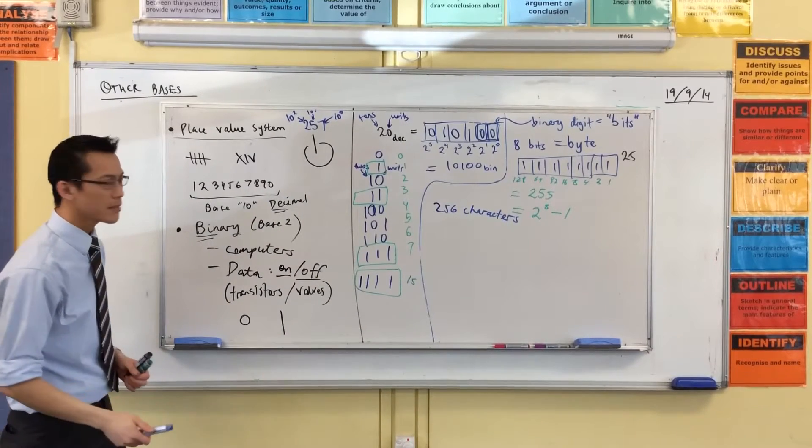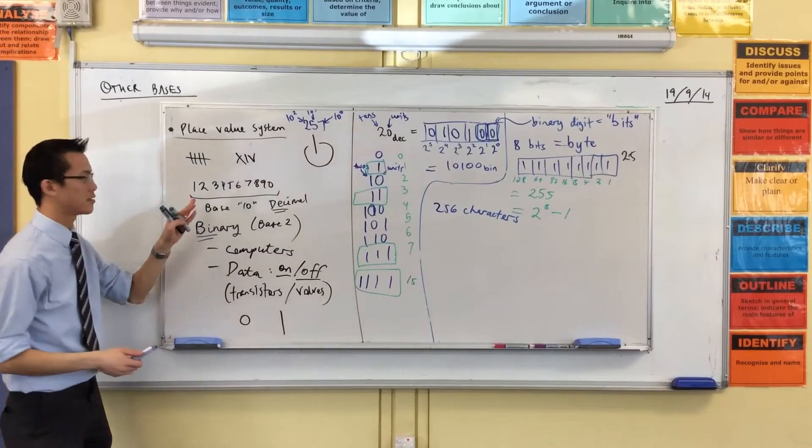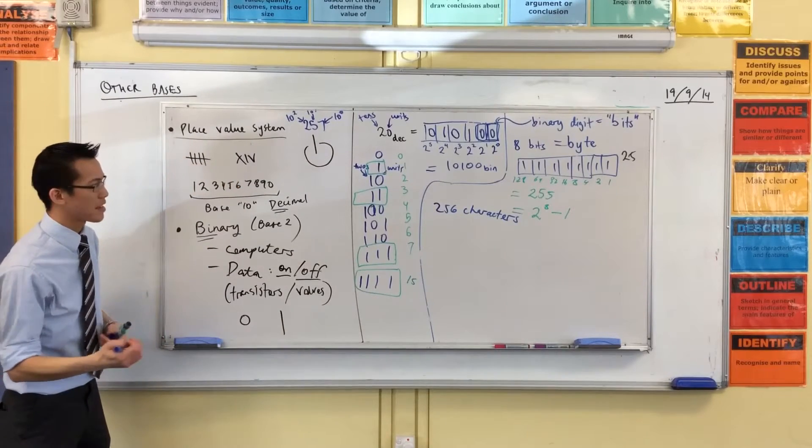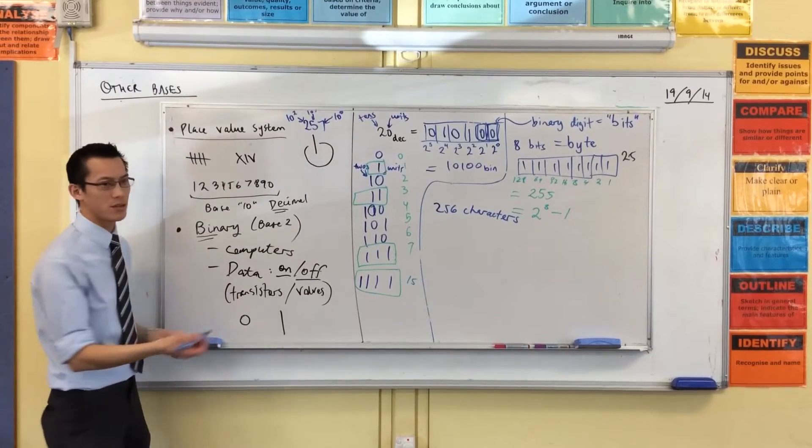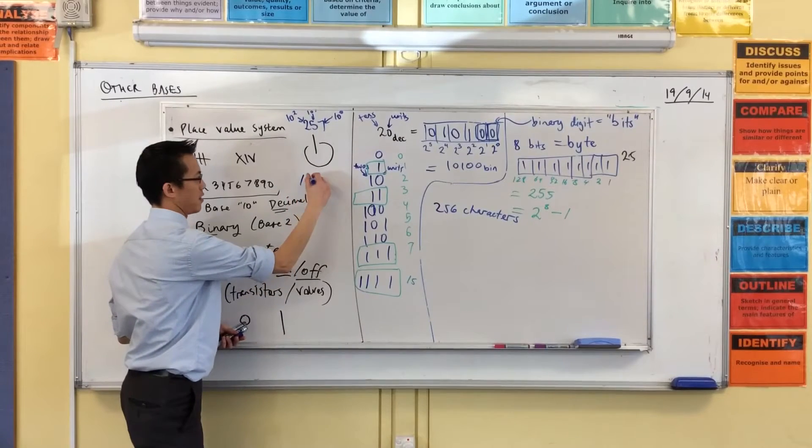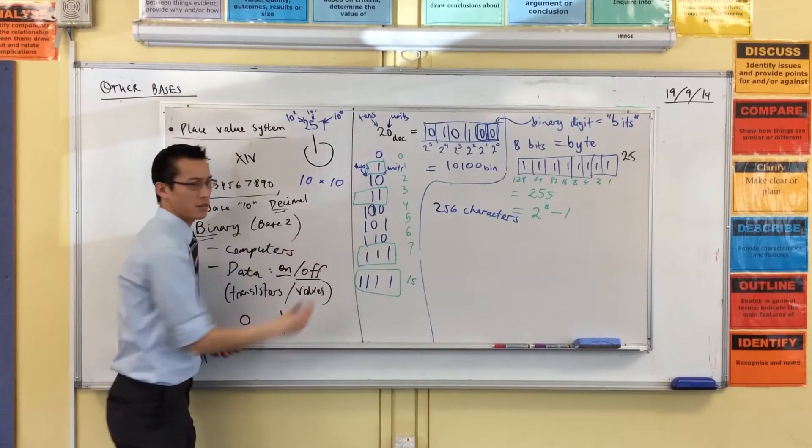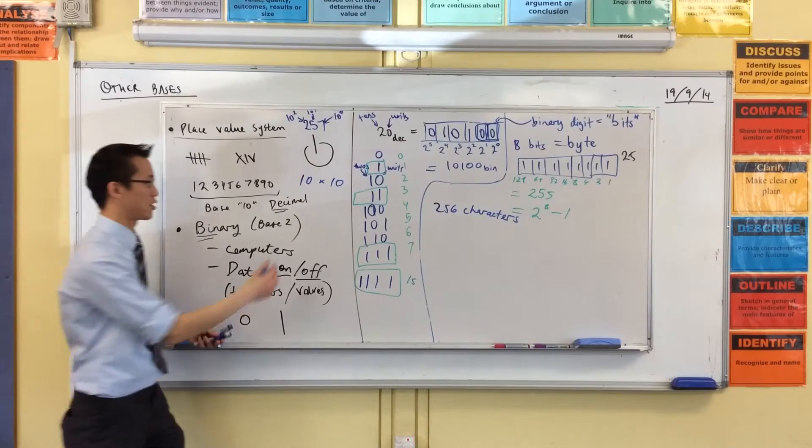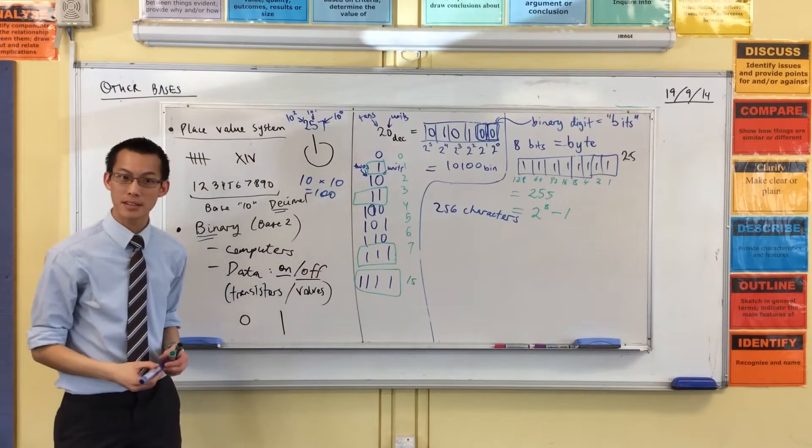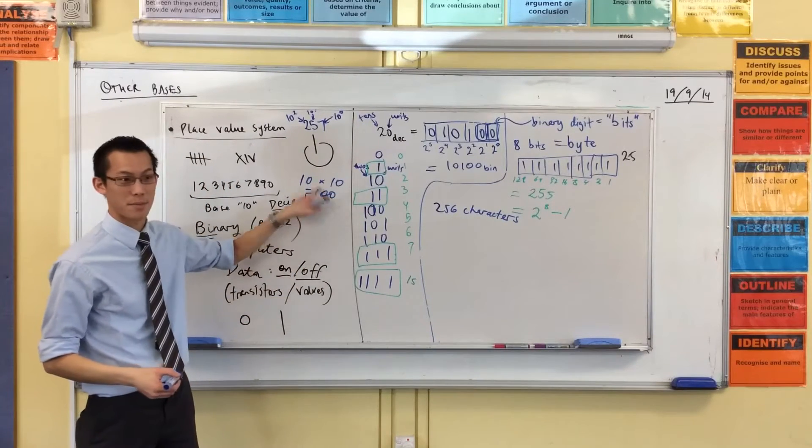If I have base 10, then if I have two characters, each one has 10 possibilities, so I have 100 different options. Does that make sense? 100 different characters I can represent here.